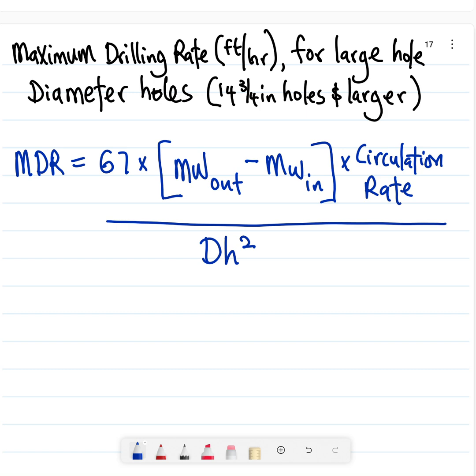In this particular video, I will be showing us how to calculate the maximum drilling rate in foot per hour for large hole diameter holes, pretty much from 14 three-quarter inch holes upwards.